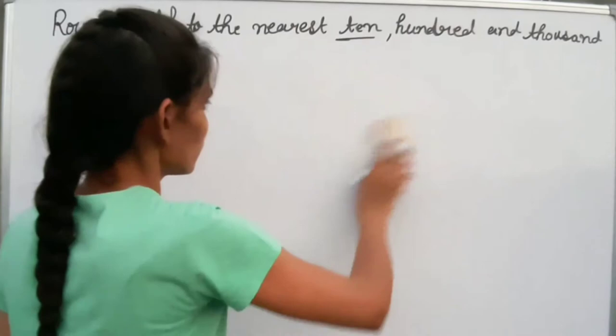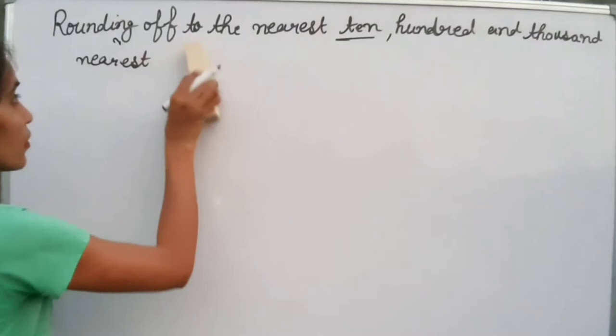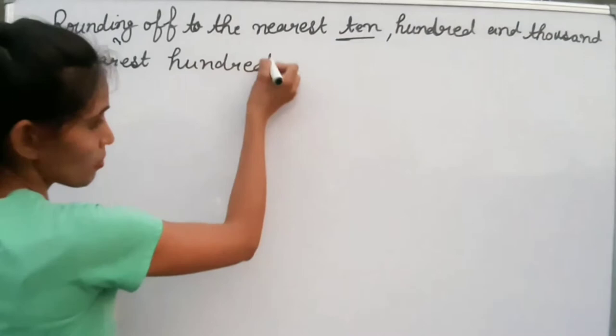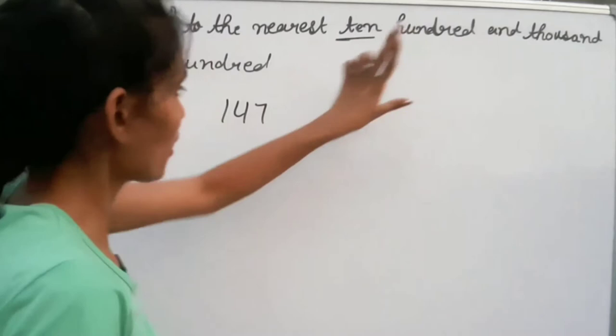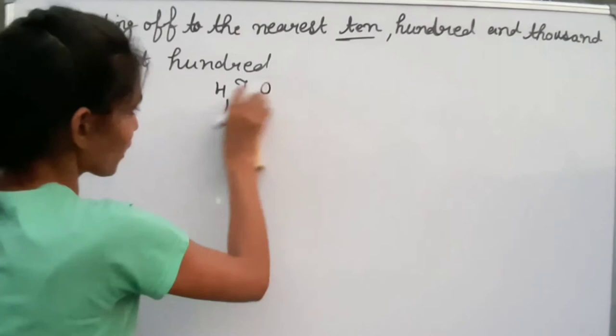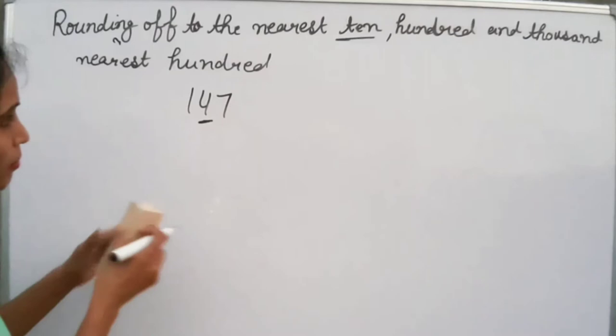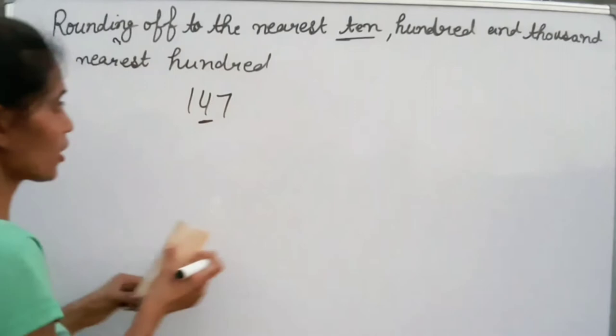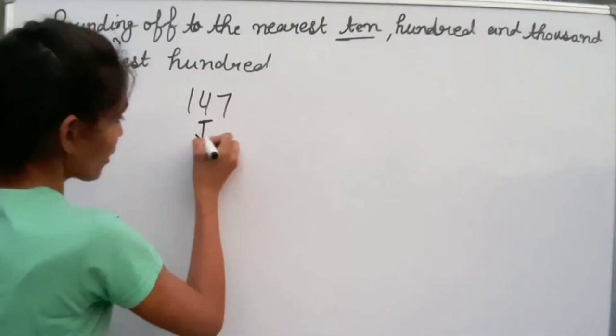Now let's take rounding to the nearest 100, using the same example: 147. To round to the nearest 100, we look at the tens place value. Our tens digit is 4. We check whether 4 is greater than or less than 5. Our value of 4 is less than 5.